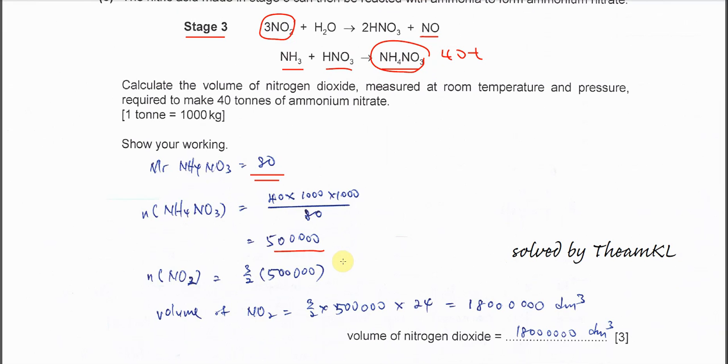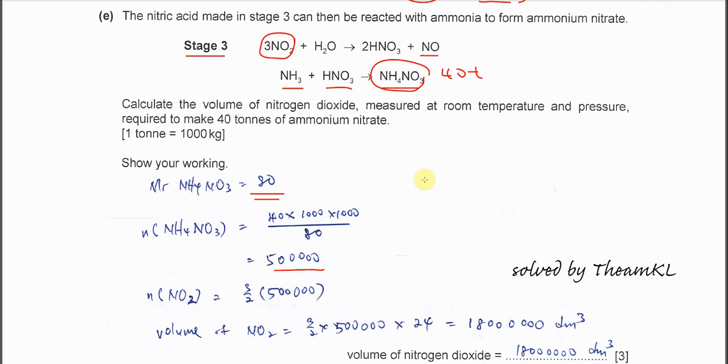After that you have to use the mole ratio. We know that the mole ratio between ammonium nitrate and HNO3 is 1 to 1, means the mole we calculate here is the same as the mole of nitric acid.